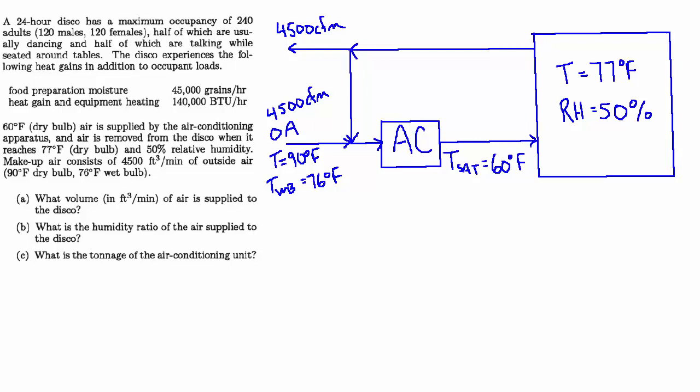Makeup air consists of 4500 CFM of outside air which is 90 degrees dry bulb and 76 degrees wet bulb. They have three questions for us: A. What volume in CFM of air is supplied to the disco? B. What is the humidity ratio of the air supplied to the disco? And C. What is the tonnage of the air conditioning unit?